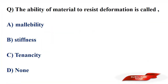First question: The ability of a material to resist deformation is called? Options: malleability, stiffness, tenacity, none of those. Answer: option B, stiffness. The ability of a material to resist deformation is called stiffness.